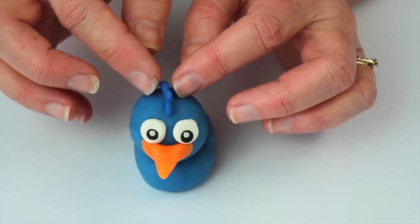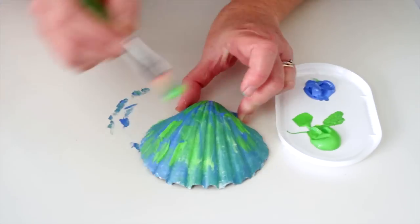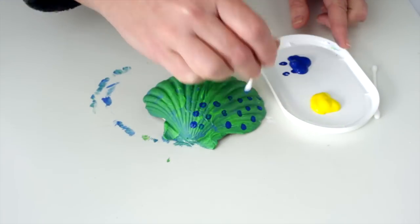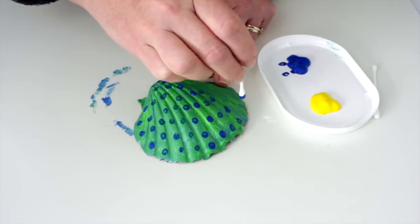To finish off the peacock's train, paint the shell with blue and green paint and allow it to dry before painting on the eyes of the feathers. Dip the cotton bud into the blue paint and make blue dots on the shell. Allow it to dry before applying the yellow paint.